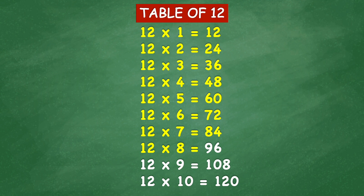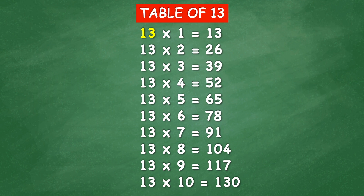Table of 12: 12 times 8 equal 96, 12 times 9 equal 108, 12 times 10 equal 120.